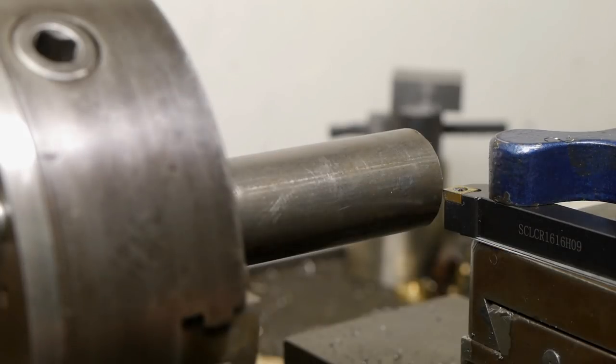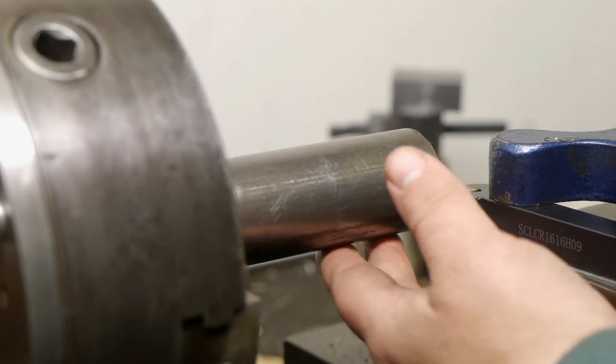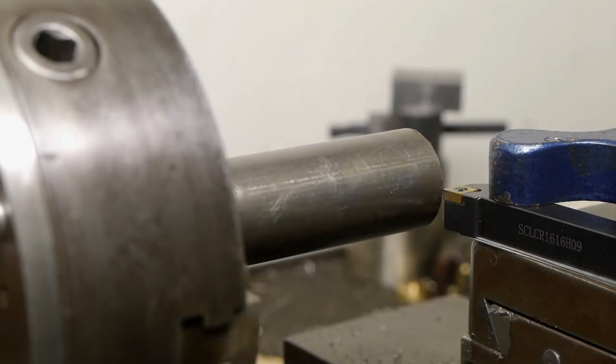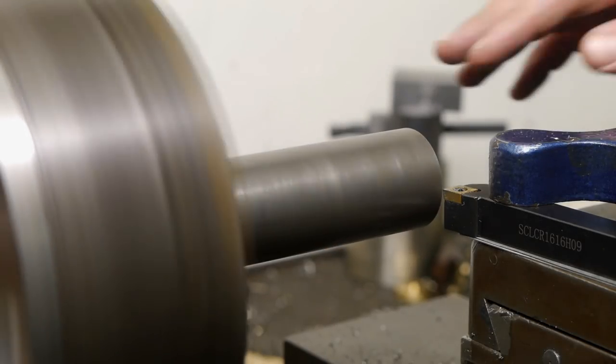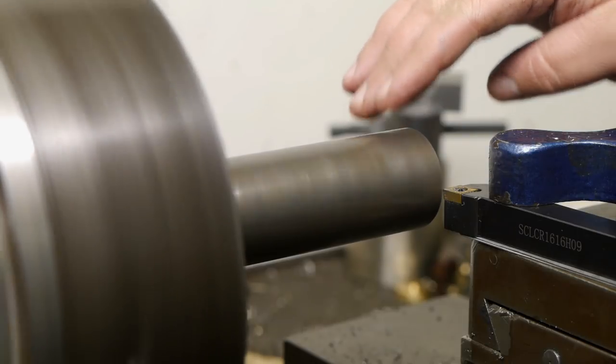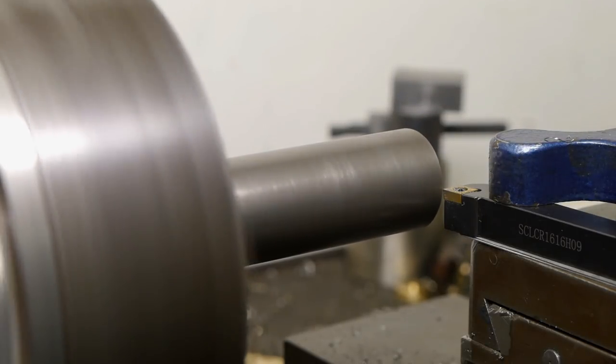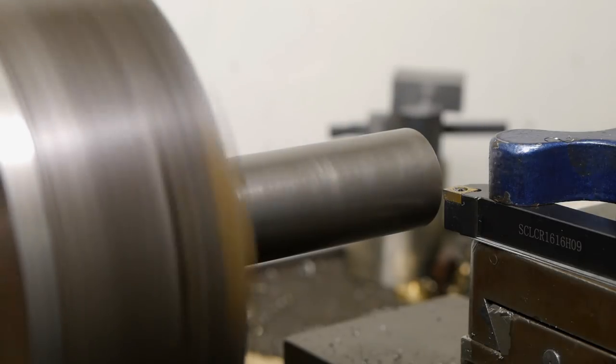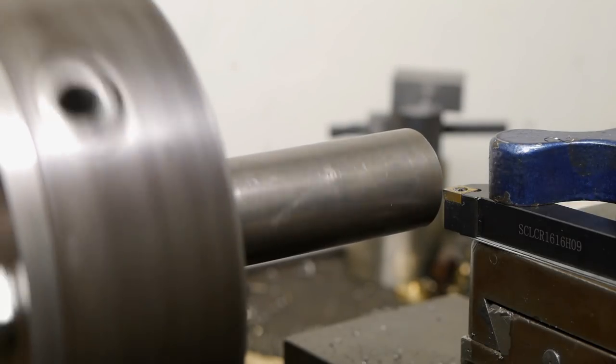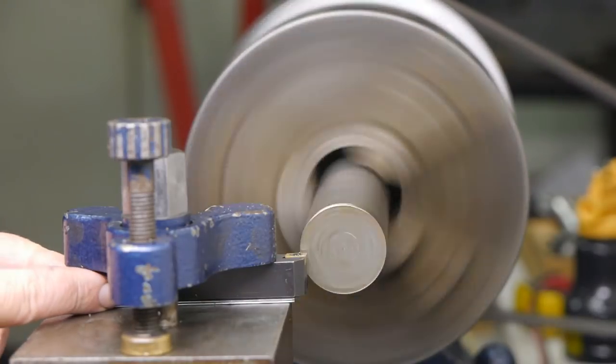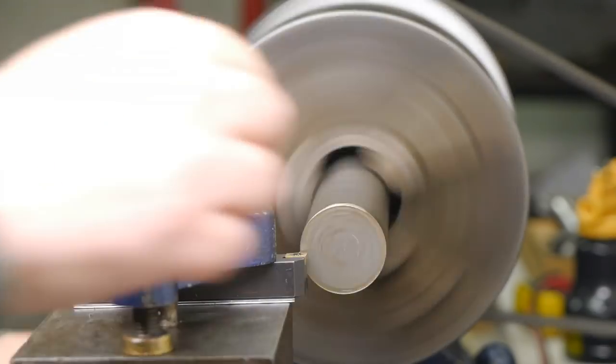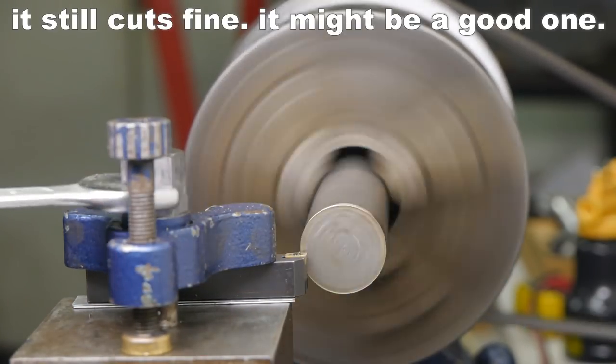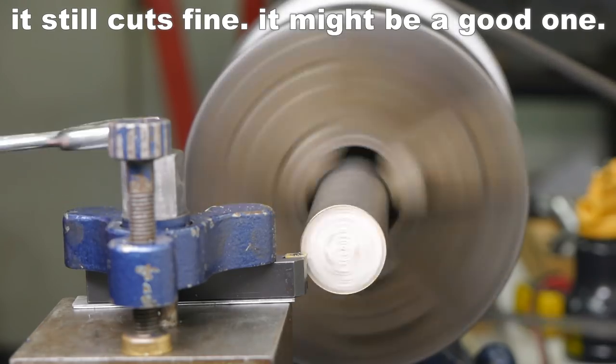I moved to the blue lathe because this one has a chuck with a throat that is big enough for this stock material. Unfortunately it's a bit bell-mouthed so it isn't running 100% true, but it should be good enough for a couple of spacers. I'm using the same tool bit as I was using at the start of the project.